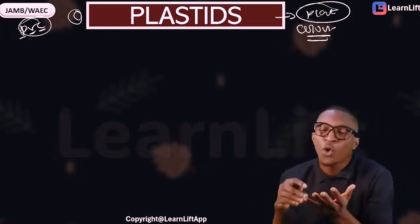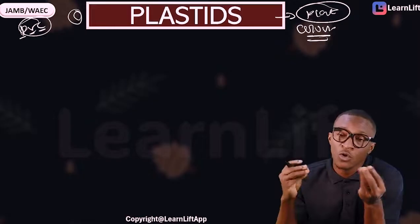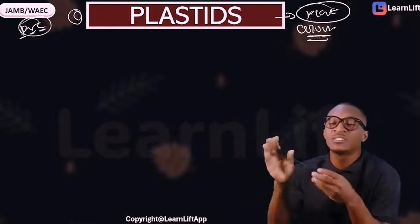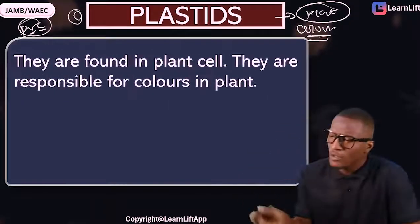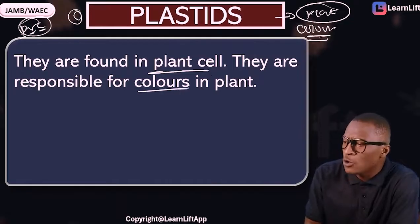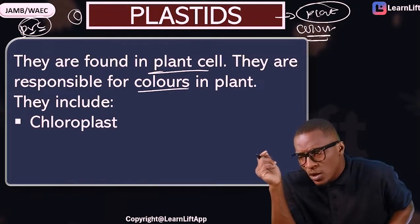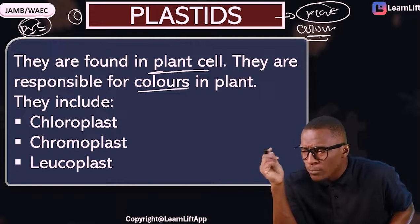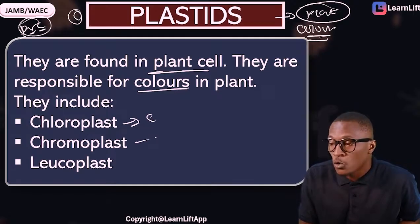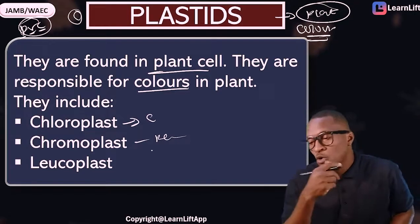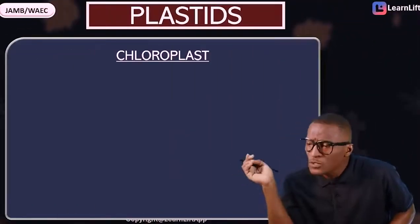There are three types of plastids: chloroplasts, chromoplasts, and leucoplasts. Chloroplasts contain chlorophyll and are responsible for photosynthesis. Chromoplasts give colors such as yellow, red, and orange, and they attract insects for pollination. Leucoplasts are colorless and function in food storage.